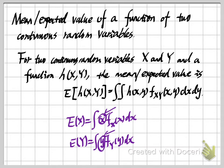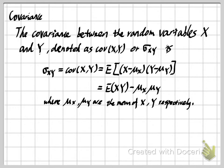Now about the variance — for two random variables, instead of variance we use the term covariance. The covariance between two random variables x and y is denoted by sigma sub xy, or COV(x, y). The definition is the mean of the product of the distances: x minus the mean of x, times y minus the mean of y. Similarly to variance of one random variable, we have two methods to compute this: by the definition, or by the shortcut formula — the expected value of xy minus the product of the means.